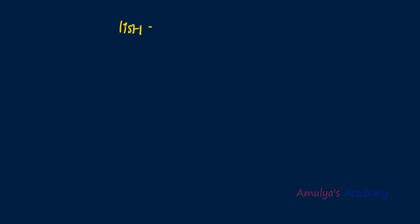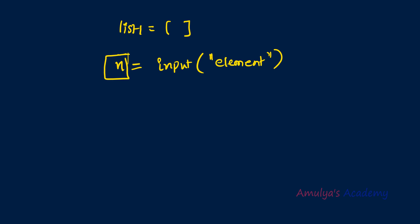To take user input for a list, first we create an empty list. Next we need to add elements to the list, taking each element from the user. For that I'll use the input function — I'll take a variable and assign it to input(), asking the user to enter an element. Then I'll use the append function: list1.append(element) to add it to the list.